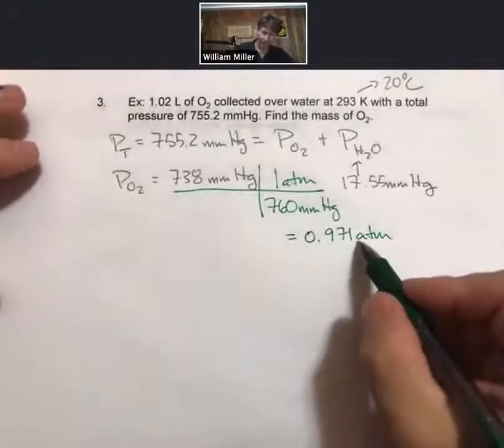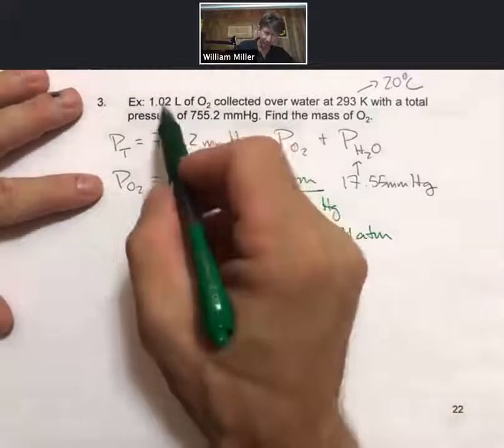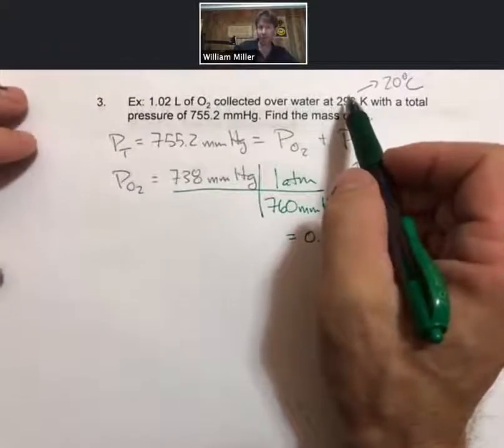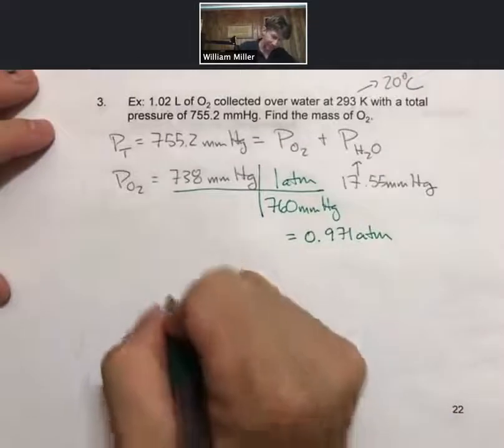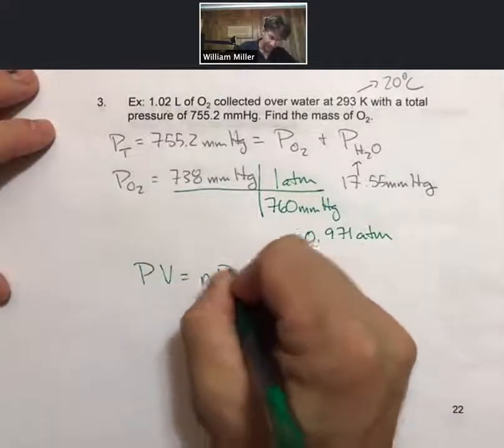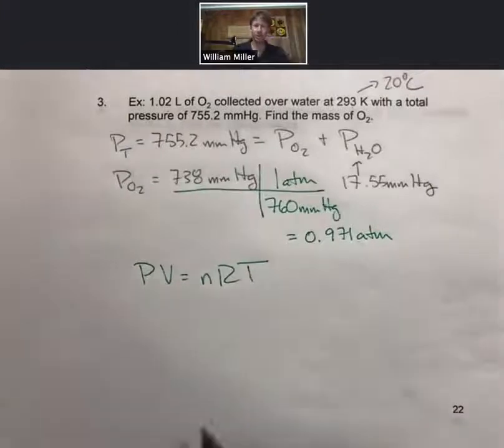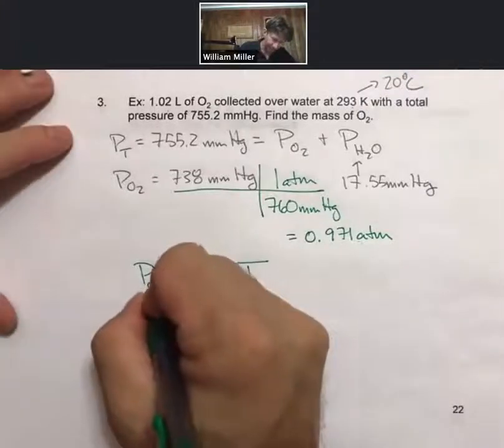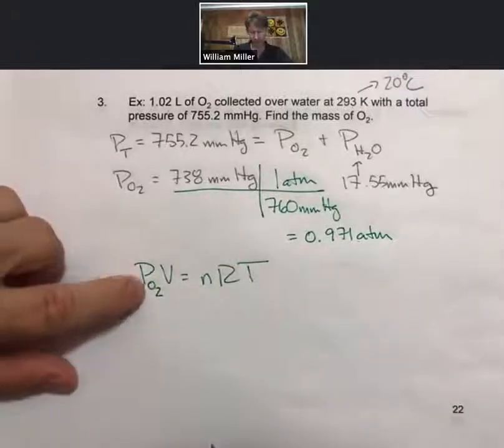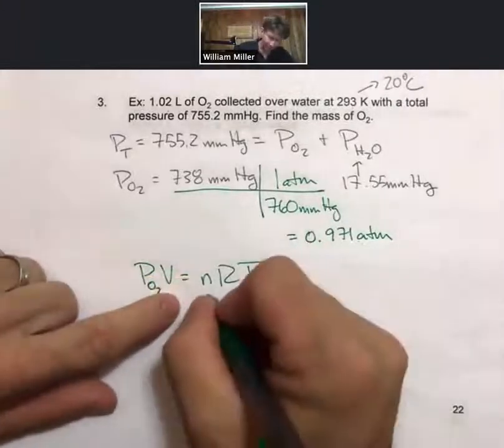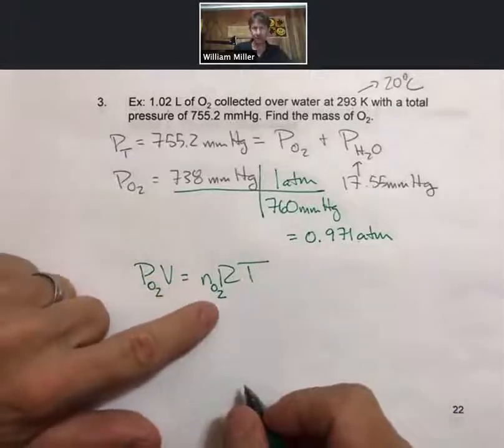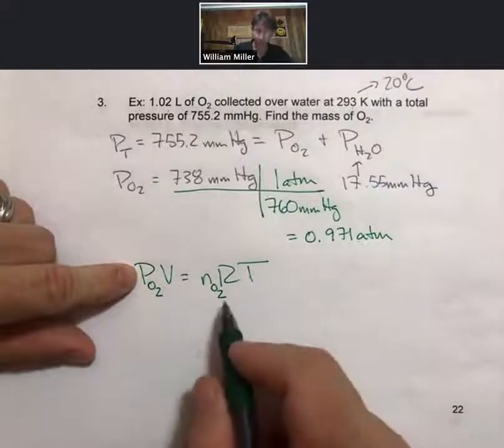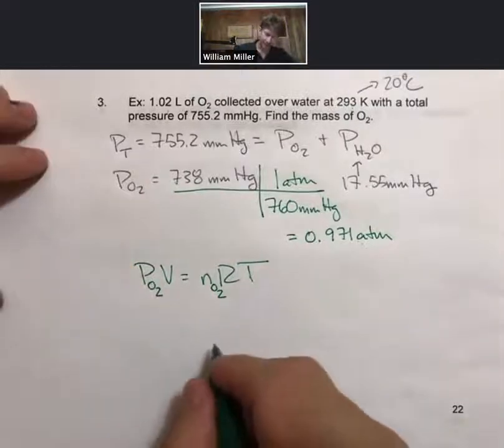We've got our partial pressure of oxygen, we've got our volume, and we've got our temperature. That's enough information to solve for the moles of oxygen using the ideal gas law. Here's the ideal gas law in general—this will work fine. I like to personalize it when we're using a specific gas, so the pressure or the partial pressure of oxygen will be specifically for the moles of oxygen. If we're using the partial pressure of oxygen, we will get moles of oxygen.